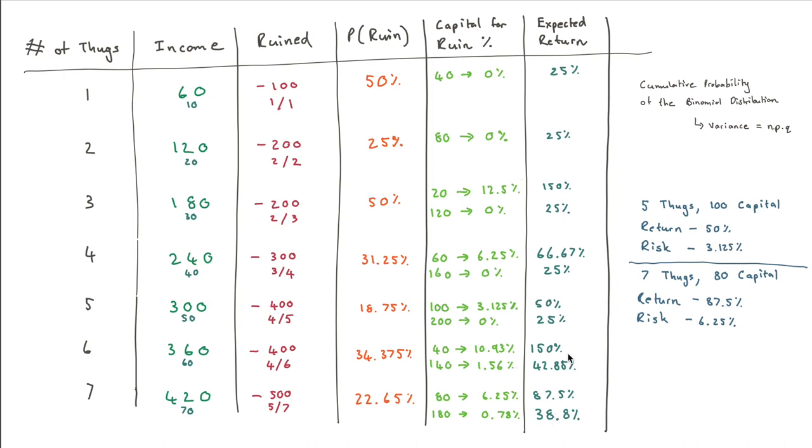So that's why we won't necessarily go for the lowest probability of ruin, we need to coincide it with our expected return. Remember, we're trying to minimize ruin and maximize return. So these are the two things that you want to consider, which means the final answer would either be 5 thugs, 100 capital, get a return of 50, and a risk of 3.125%. In this case, we're a little bit under our expected risk, or we can go a little bit over our risk, and 6.25% is actually, it's less of a deviation than 3.125%, and here what we can do is say that now there's 7 thugs, we have 80 capital, this will give us a return of 87.5% with a risk of 6.25%.